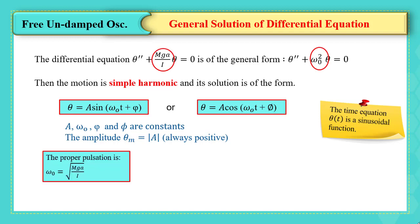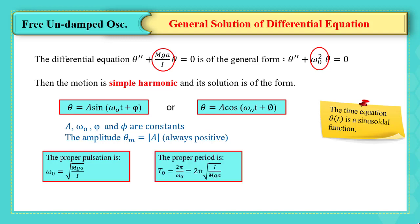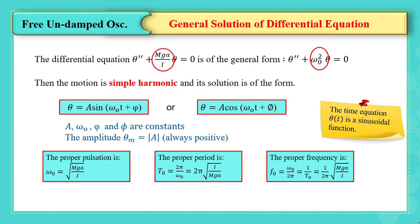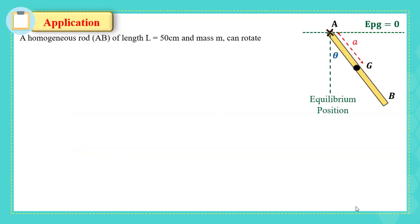The characteristics of the compound pendulum are: the proper pulsation ω₀ = √(Mga/I), the proper period T₀ = 2π√(I/Mga), and the proper frequency f₀ = (1/2π)√(Mga/I).